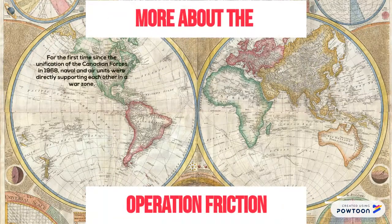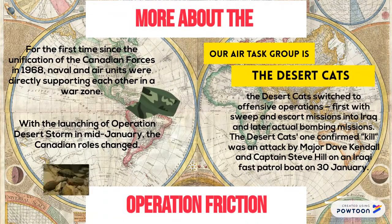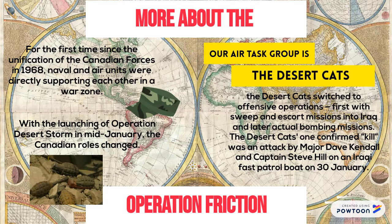For the first time since the unification of the Canadian Forces in 1968, naval and air units were directly supporting each other in the war zone. With the launching of Operation Desert Storm in mid-January, Canada's roles changed, and the air task group — the Desert Cats — switched to offensive operations.